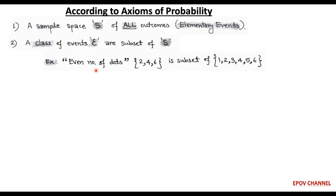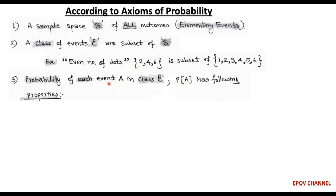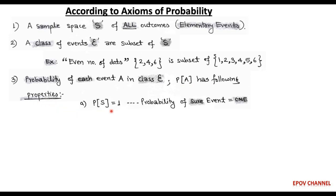When we say a class of even number of dots, then we have only 2, 4, and 6 sample points, which are even number of dots. The third point is: the probability of each event A in a class E is noted by P(A), and this has the following properties. First, the probability of the sample space — that is, a sure event — is always equal to 1.